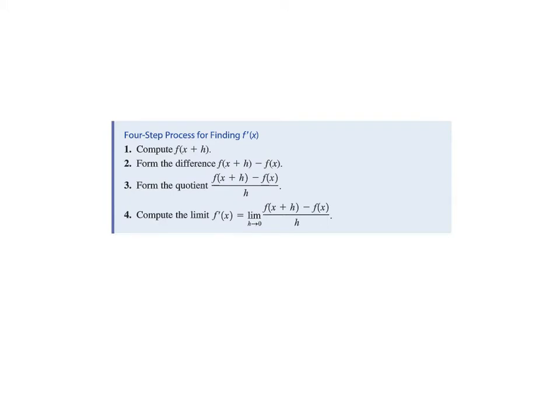So just to review, we have a four-step process for finding the derivative using the definition. We compute f of x plus h. Then we form the difference, f of x plus h minus f of x. Then we form the difference quotient by dividing by h. And finally, we take the limit as h goes to zero. We break it into these four steps to make the computation a little easier.